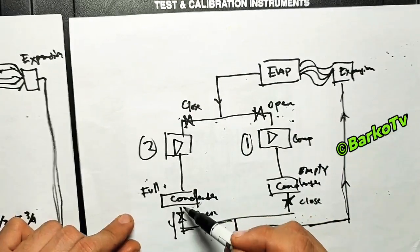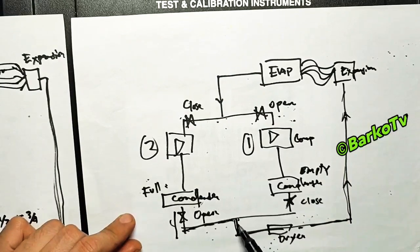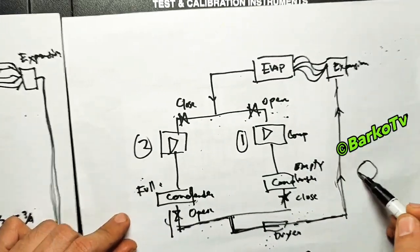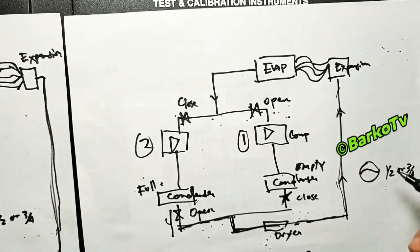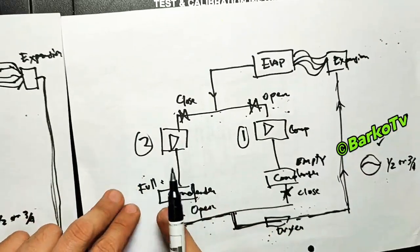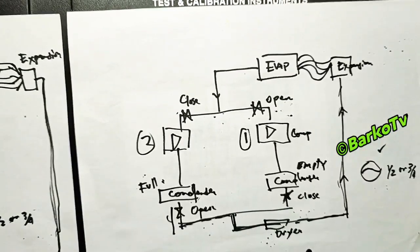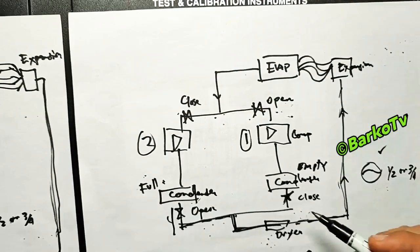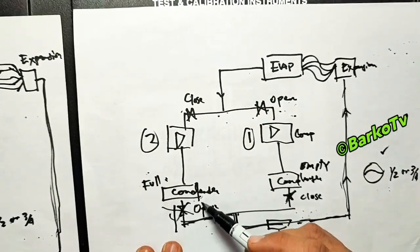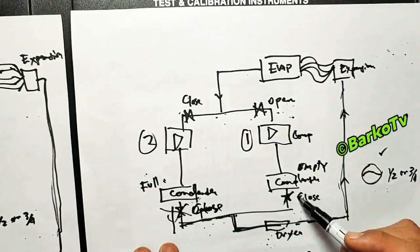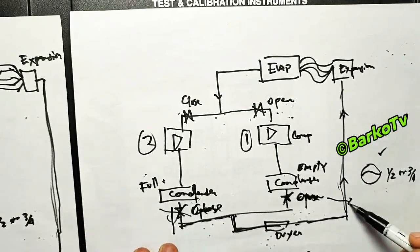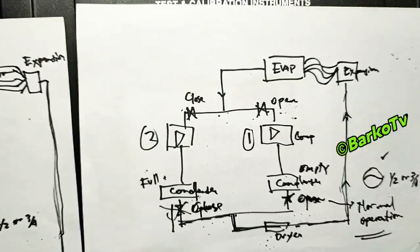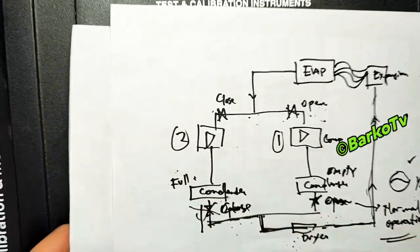The scenario is: we need to transfer the refrigerant of number 2 going to number 1. The condenser after-condenser valve of number 2 is open - the pressure goes to the dryer, to expansion valve, evaporator, and suction, which is suctioned by compressor number 1 and stored in the number 1 condenser. You need to stop when the level reaches one half or three fourths to be safe. After reaching that level, close the number 2 condenser and open the after-condenser for number 1 so that you can operate at normal operation. You will have a closed loop for number 1.